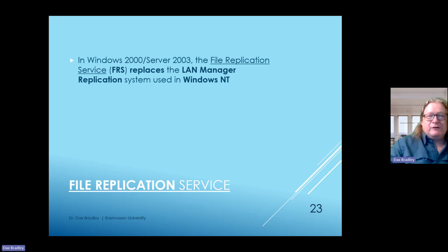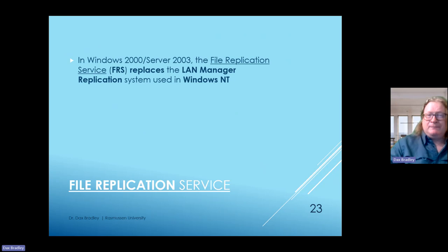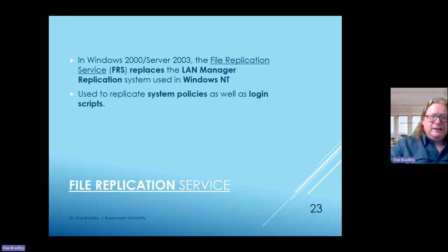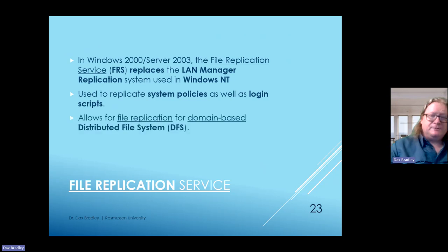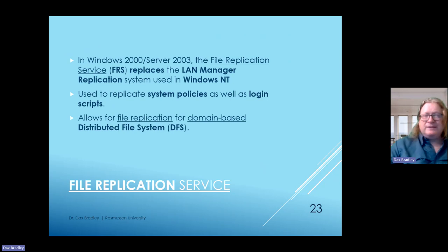When using a file replication service—available in Windows 2000, 2003, and up—it replaces the LAN Manager replication used in older Windows NT. You probably won't see the old system unless you're in a legacy environment. It is used to replicate system policies as well as login scripts, and it allows for file replication for domain-based distributed file system, or DFS.